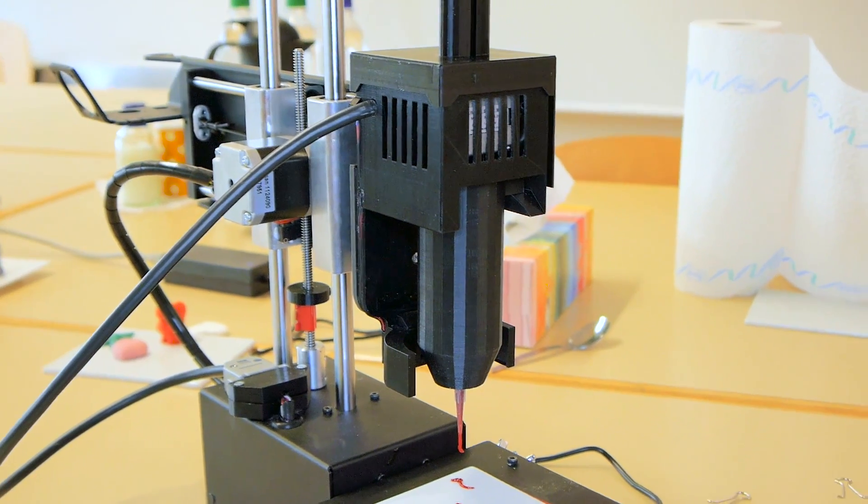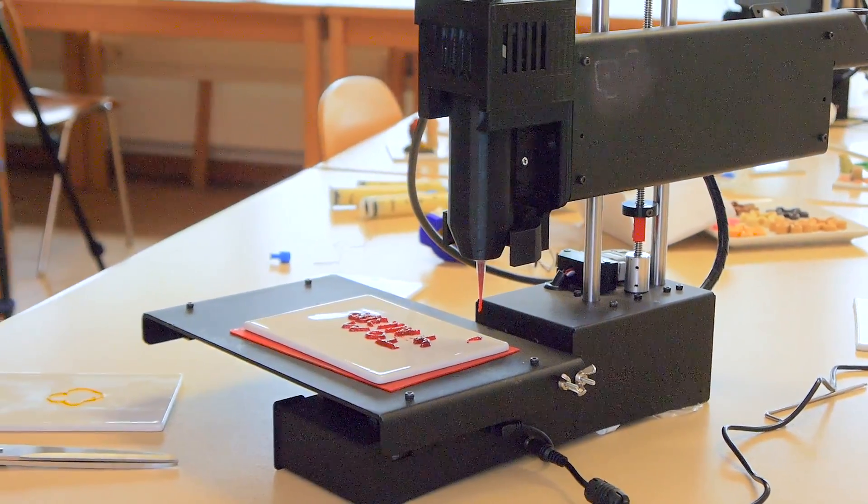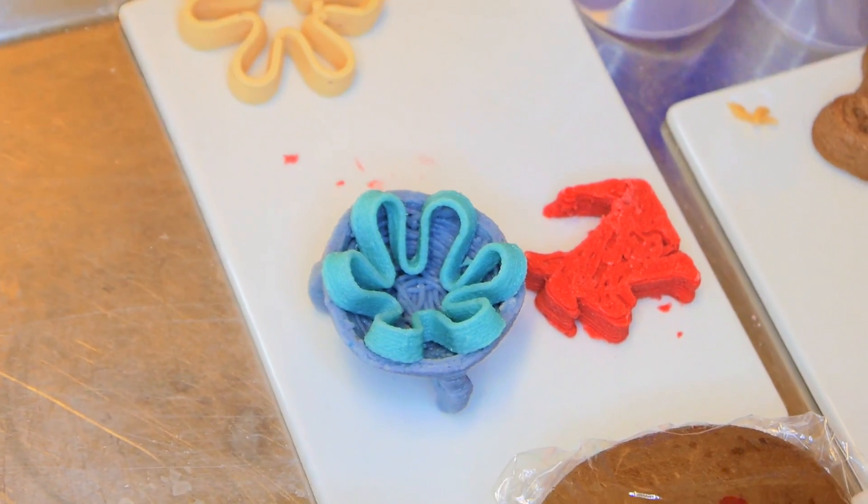We are now working on fulfilling the Kickstarter and we have to produce about almost 70 printers or printing heads and until then we have to make some improvements of like, for example, it has to get an auto leveling and we will work on the software and also on the food of course. We work on food safety.